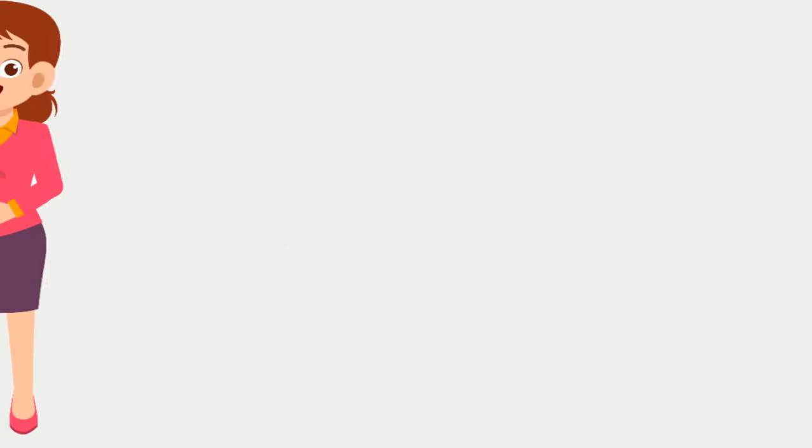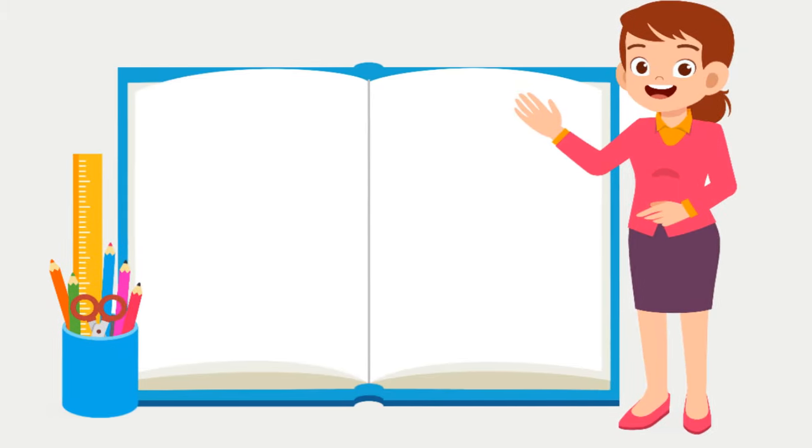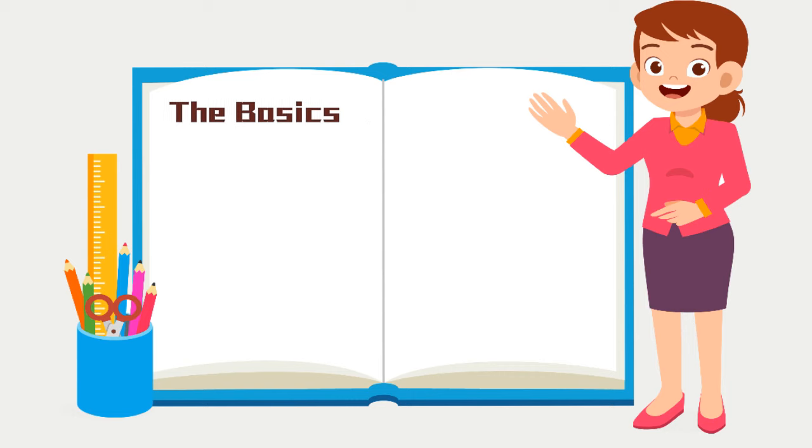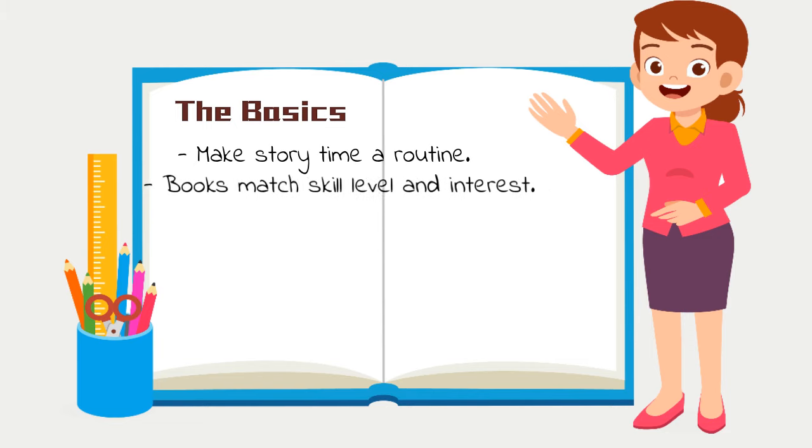In addition to what you say, here are some extra tips to consider as well. Make story time a routine. It is so important for young children to have daily routines. That means reading to your child every single day with no exceptions. Pick a book that is the correct reading level for your child.